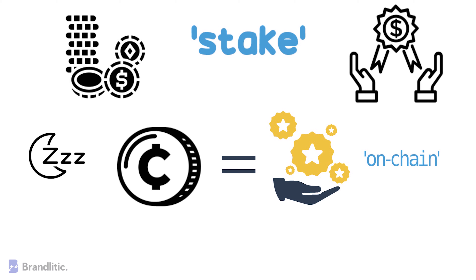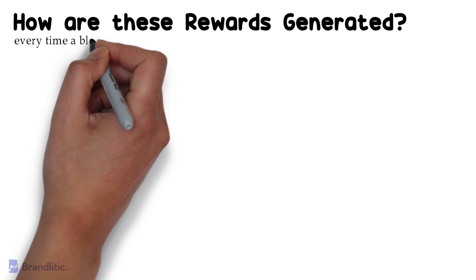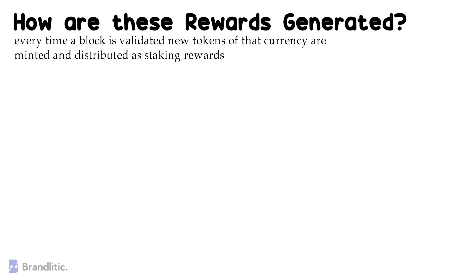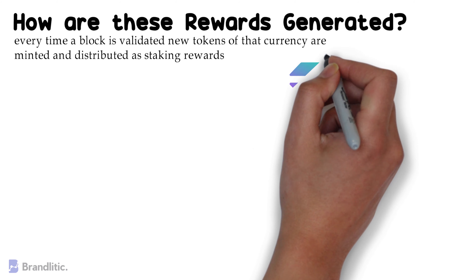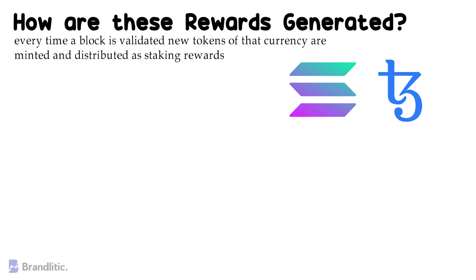How are these rewards generated? Every time a block is validated, new tokens of that currency are minted and distributed as staking rewards. For example, proof-of-stake assets like Solana, Tezos, etc., let you earn rewards on your staked assets.